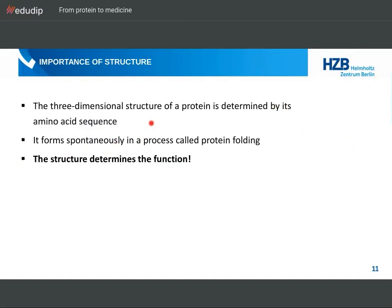What we want to take away from this is that the three-dimensional structure of the protein is determined by its amino acid sequence. This is a very important point. This three-dimensional structure forms spontaneously in a process called protein folding. The most important point — written in bold — is that it is really the structure that determines the function of the protein. If there is one sentence you take home from this, it has to be this one: the structure determines the function of the protein.